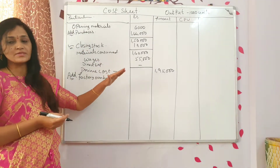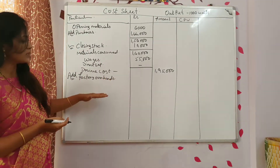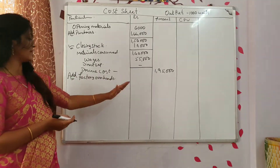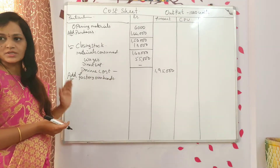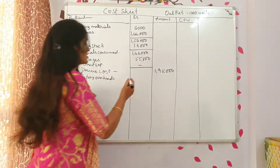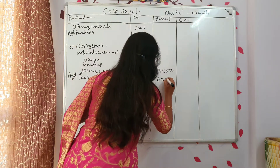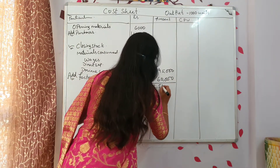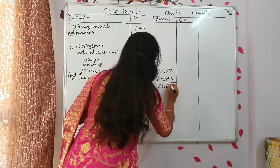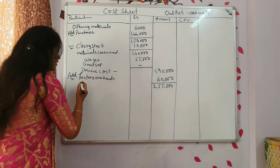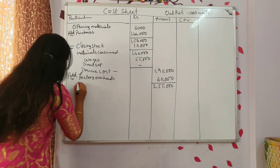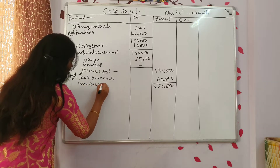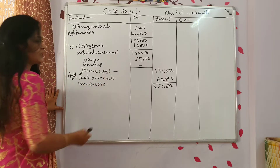If it is split into different expenses, mention that and then do the total. He gave you directly the total amount: 60,000. Now do the total — you will get 2,55,000. This is called either factory cost or works cost.